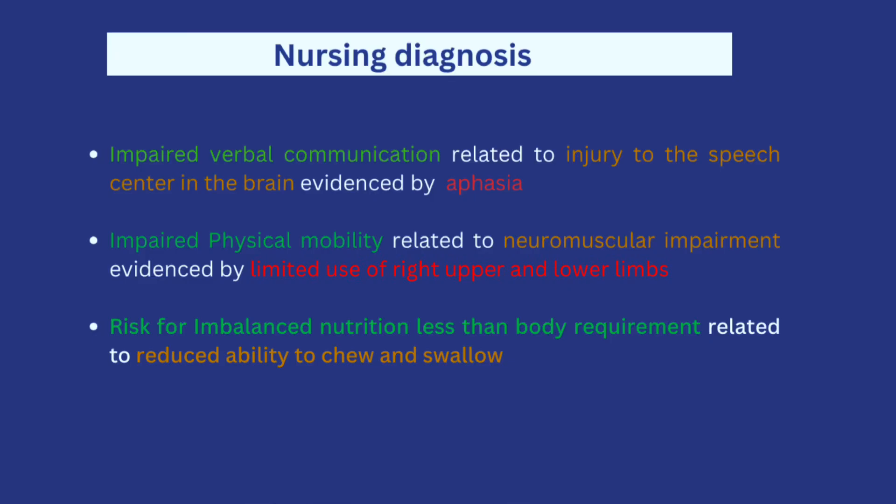Now let's go over the nursing diagnoses. For today's care plan, we're going to be working on three nursing diagnoses, which consist of two actual diagnoses and one risk diagnosis. I have already highlighted the problem statements in green, the etiology in brown, and the evidence in red. Starting with the first one: impaired verbal communication, related to injury to the speech center in the brain, evidenced by aphasia. It has already been stated in the scenario that Mr. Ajao is unable to speak.